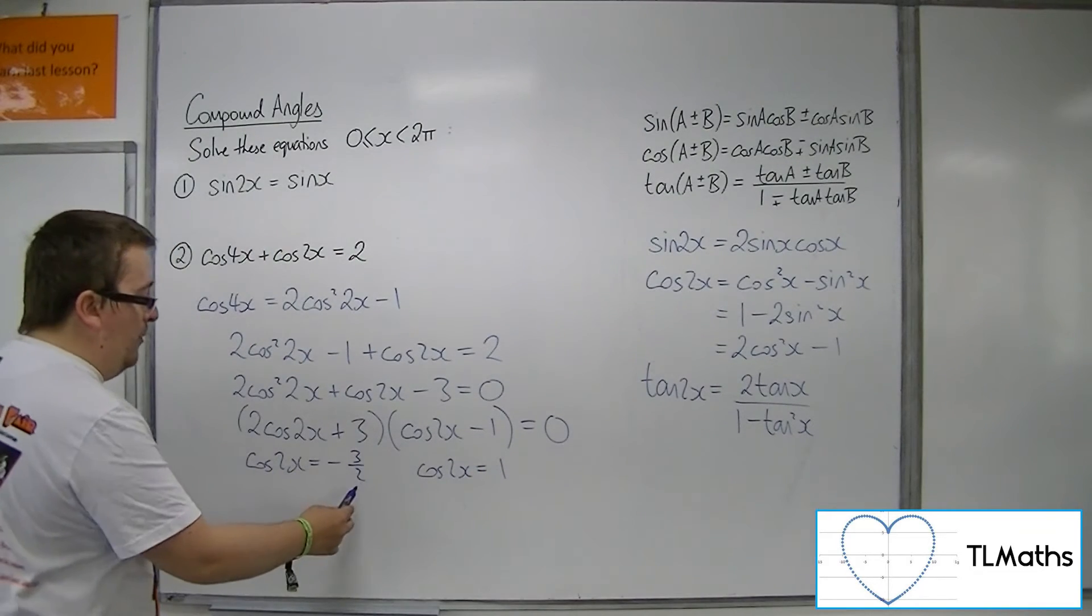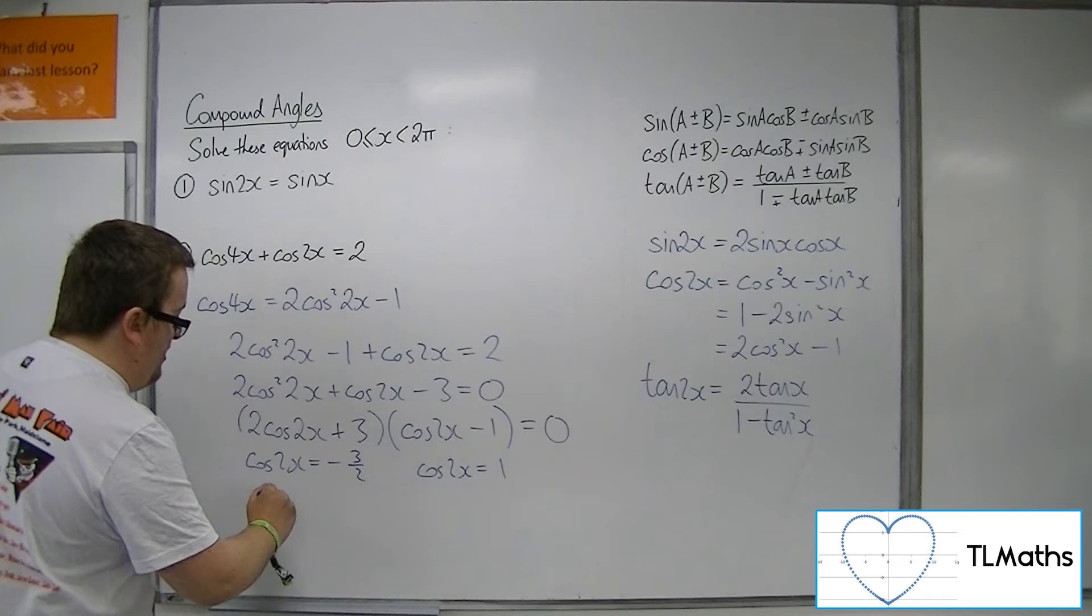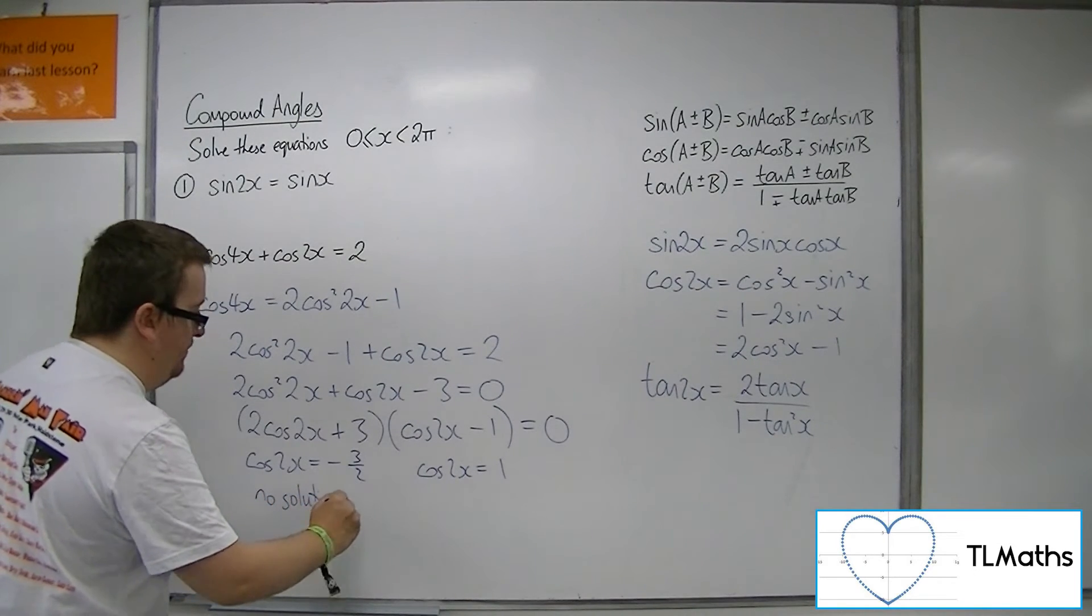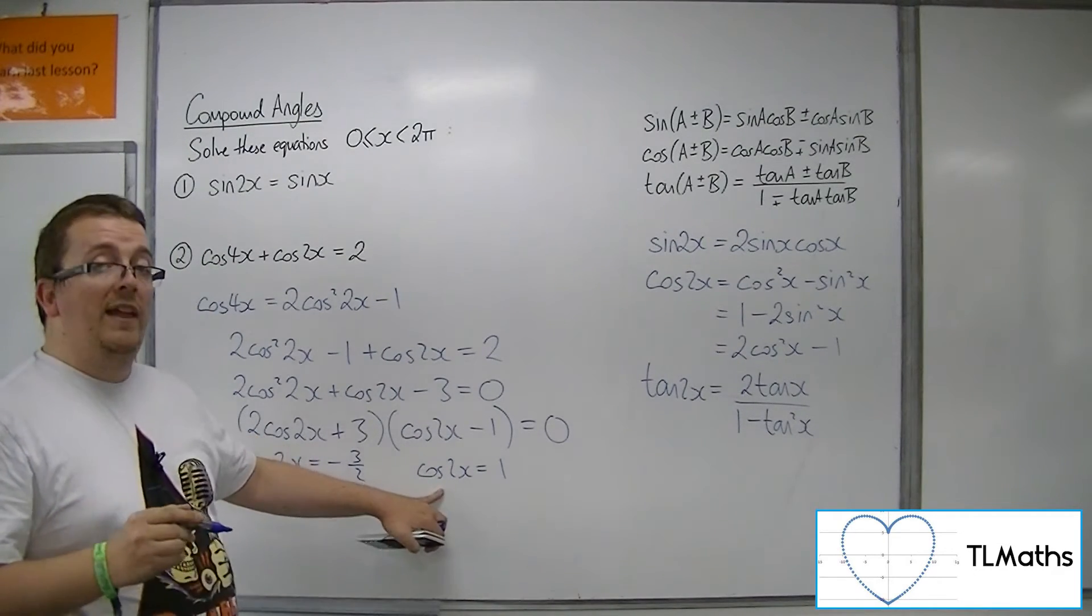Now, cos of 2x cannot be equal to minus 3 halves, so there's no solutions from that equation. Cos of 2x can be 1, however.